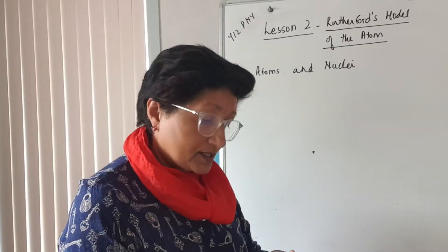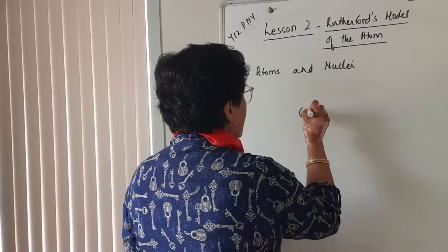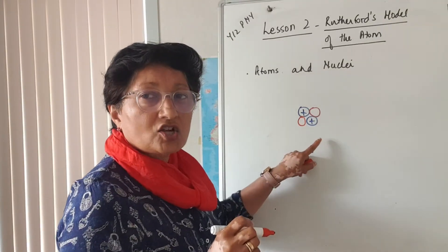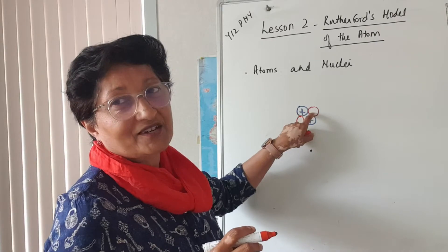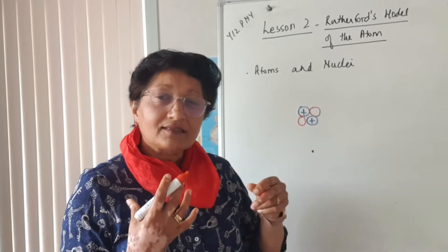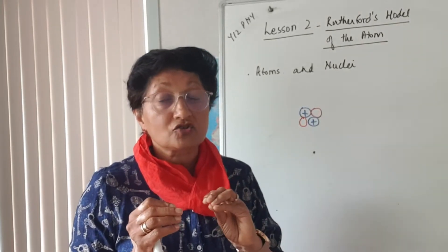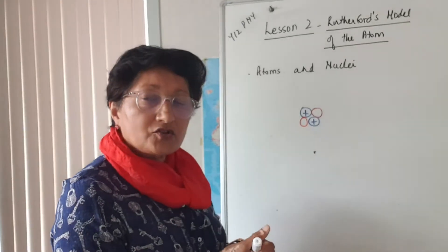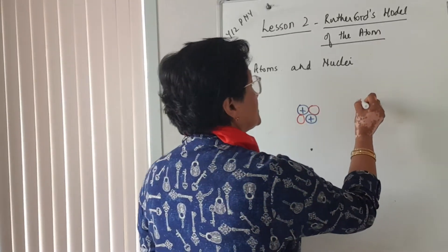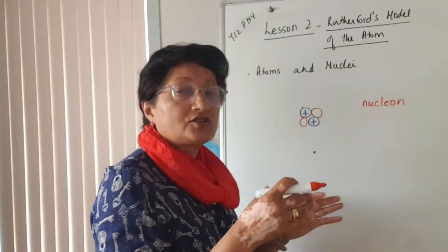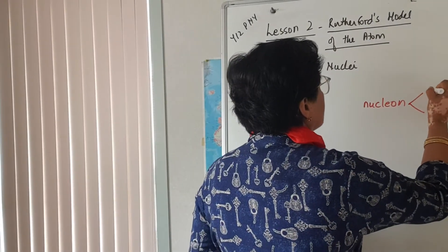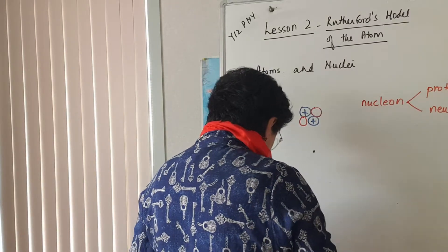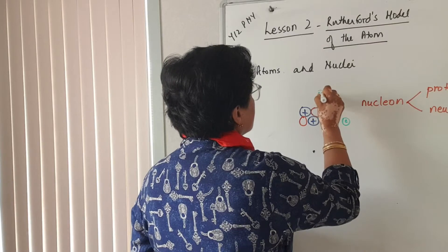So what is the atom like? The atom consists of a central nucleus, which is made up of two types of particles: positively charged protons, and neutrons which have no charge. The mass of a proton and neutron are very similar — the neutron is only very slightly heavier. Outside the nucleus you have your electrons.